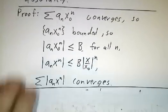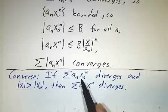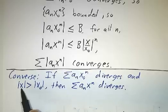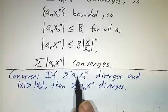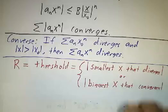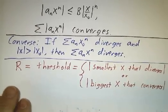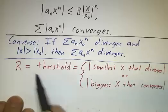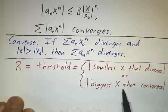Now, you can turn this statement around, and you can say, suppose that you have a point where it diverges. Then for all bigger values of x, it also has to diverge. Because if it converged for the bigger value of x, it would have to converge for the smaller value of x as well, and it doesn't by assumption. So what we've got is a threshold. Up to a certain size, it converges. Beyond that size, it diverges. And you can think of the radius of convergence, either you can think of it as the smallest x that diverges, or you can think of it as the biggest x that converges. And that gives us back our theorem.